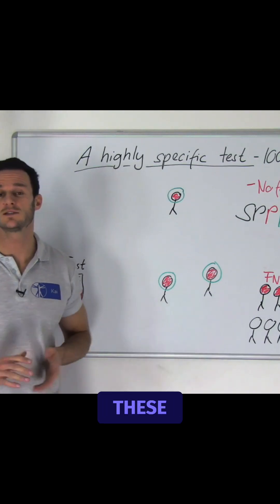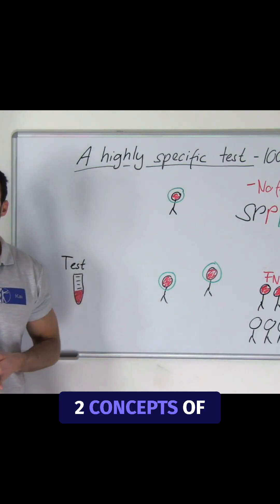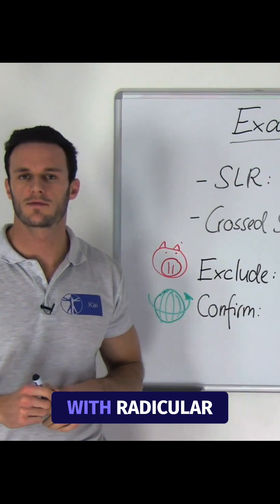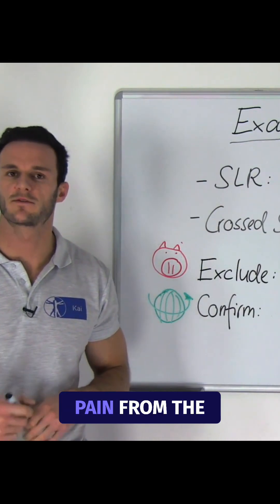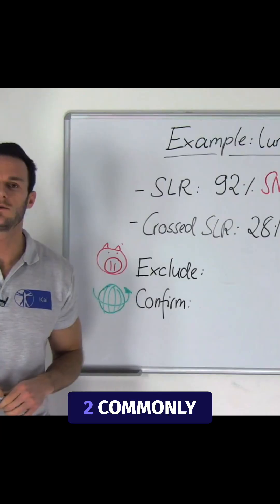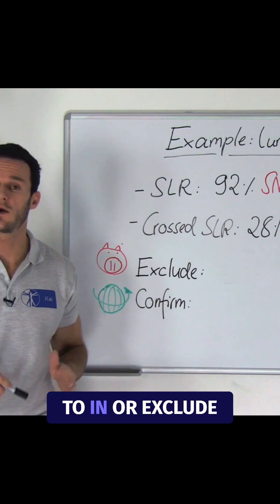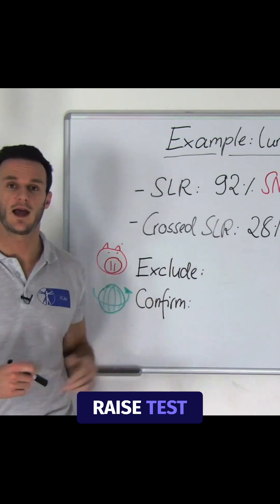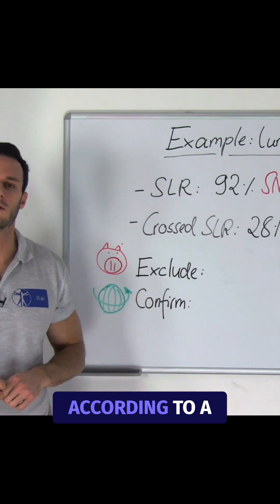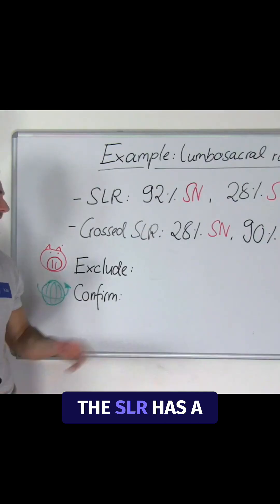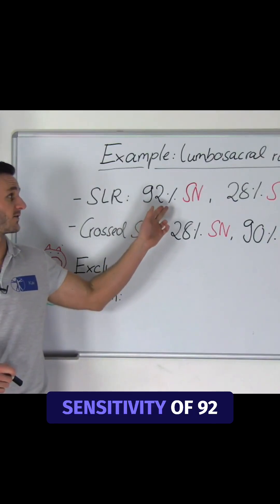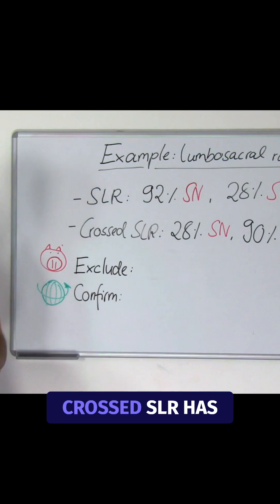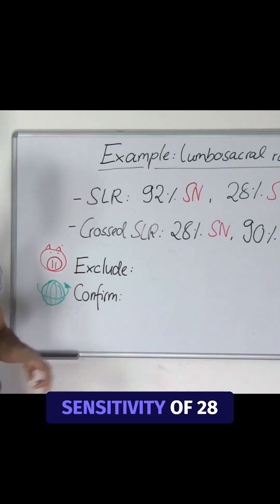Let's look at an example to make these two concepts of sensitivity and specificity more concrete. For patients with radicular pain from the lumbosacral area, two commonly used tests to include or exclude this condition are the straight leg raise test and the crossed straight leg raise test. According to a review, the SLR has a sensitivity of 92% and a specificity of 28%,